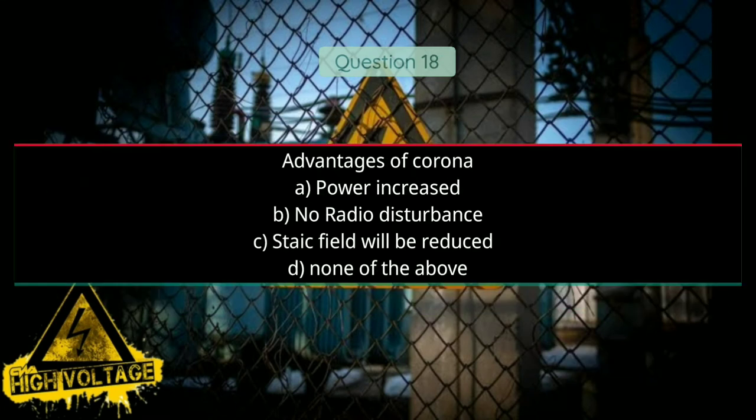Question number eighteen: Advantages of corona — Option A: power increased, Option B: no radio disturbance, Option C: static field will be reduced, and Option D: none of the above. Correct answer will be C, static field will be reduced.